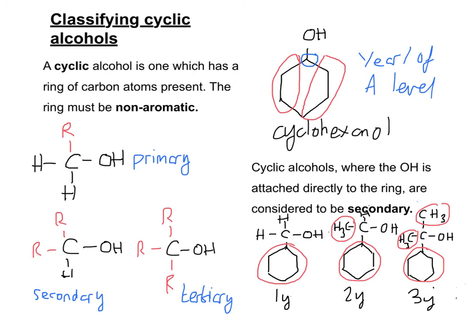So when I talk about the carbon that the OH is attached to, I'm referring to this part of the alcohol. So you always need to look at the carbon atom that the OH is attached to. And the case up at the top here is attached directly to an OH group and it also happens to be part of the ring, hence why cyclic alcohols are considered to be secondary.